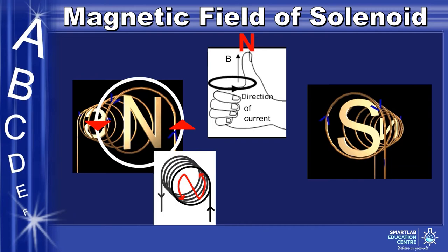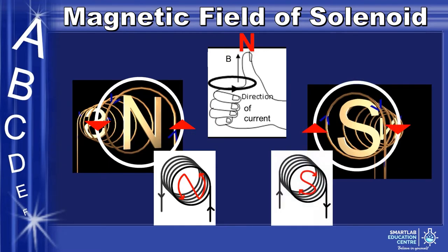By looking through the solenoid, if the current is anti-clockwise, the end closer to you is the north pole. Similarly, when the current rotates clockwise, the side closer to you is the south pole.